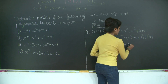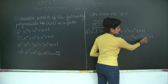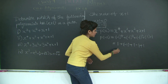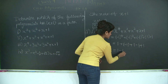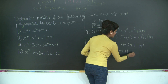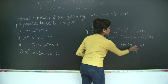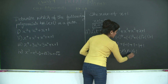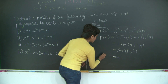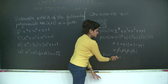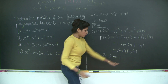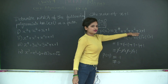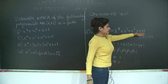Minus 1 squared is 1. So we have 1 minus 1 plus 1 minus 1 plus 1. Plus 1 cancels with minus 1, and plus 1 cancels with minus 1, leaving a remainder of plus 1. So p of minus 1 equals 1. Since p of minus 1 equals 1, which is not equal to 0, we can say that x plus 1 is not a factor of this polynomial x⁴ + x³ + x² + x + 1.